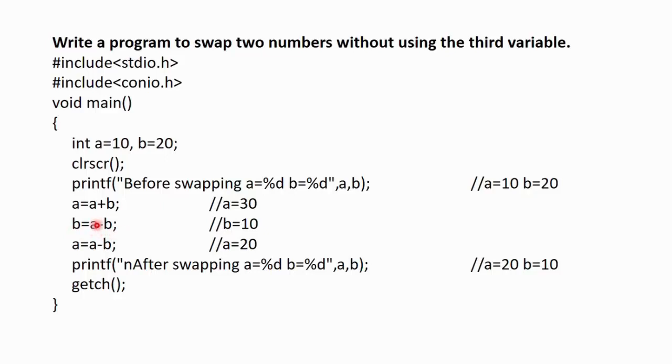So, a which is now holding 30 and b which is still holding 20 will be stored in b that is 30 minus 20 which gives the value of b as 10 over here. In the next statement a will store the difference of a minus b that is it will store the value of a which is 30 minus the value of b which is 10 which gives the value of a as 20.